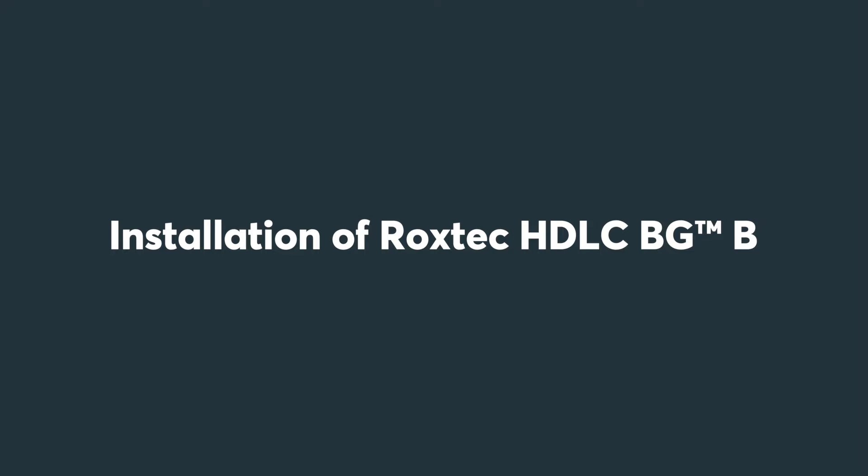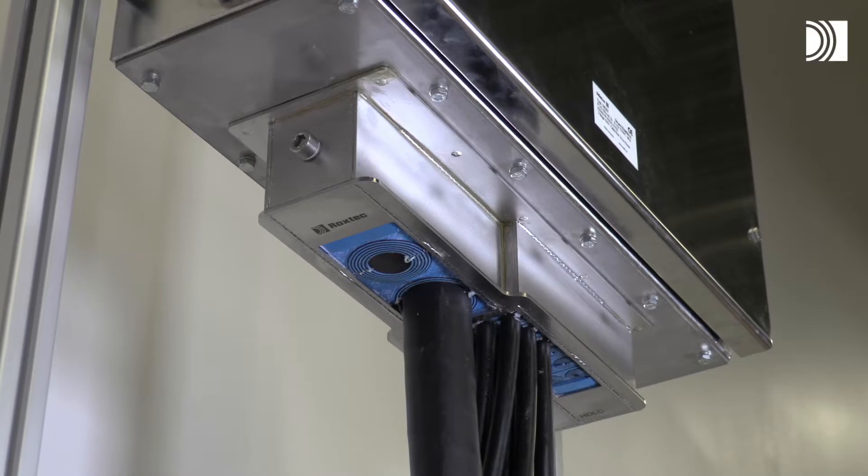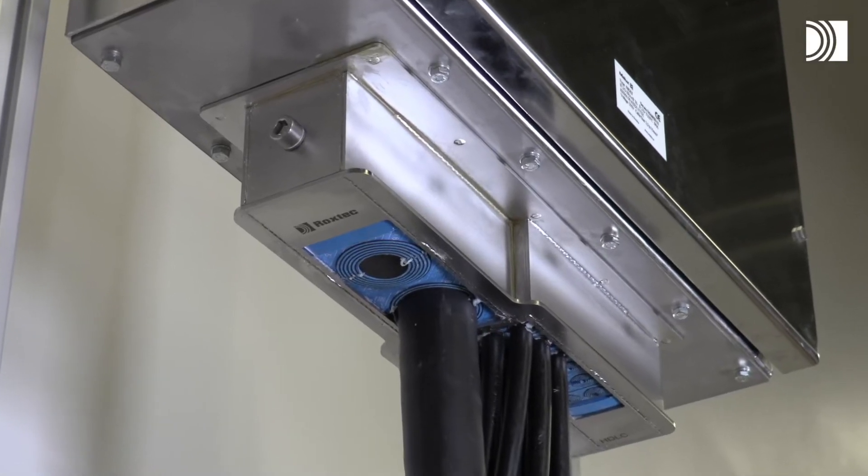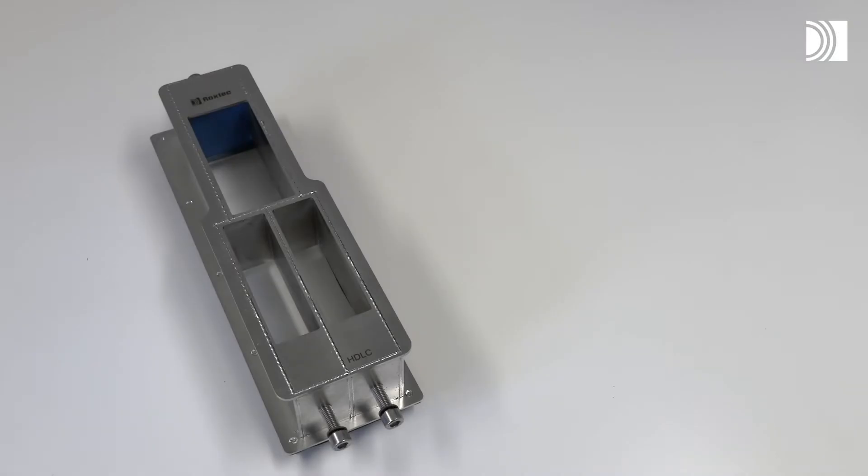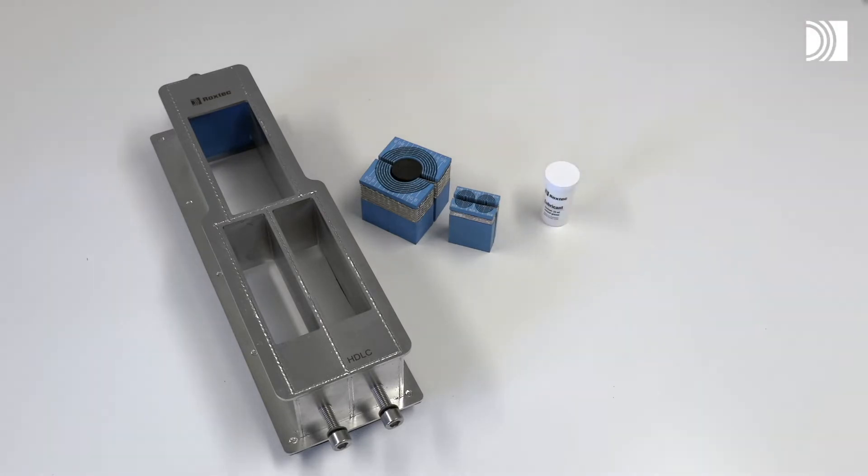Installation of Roxtec HDLC BGB. To install the Roxtec HDLC BGB, you need the frame, ceiling modules, lubricant, and counter frame.